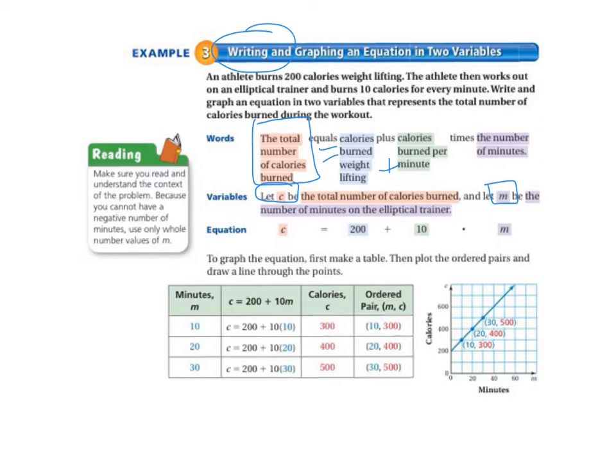Plus the calories burned per minute times the number of minutes on the elliptical trainer. So that's going to be M. M is going to be the number of minutes on the elliptical trainer. And it says in the problem that they burn 10 calories for every minute that they spend on the elliptical trainer. So it's 10 times M. So our equation is C equals 200 plus 10 times M.